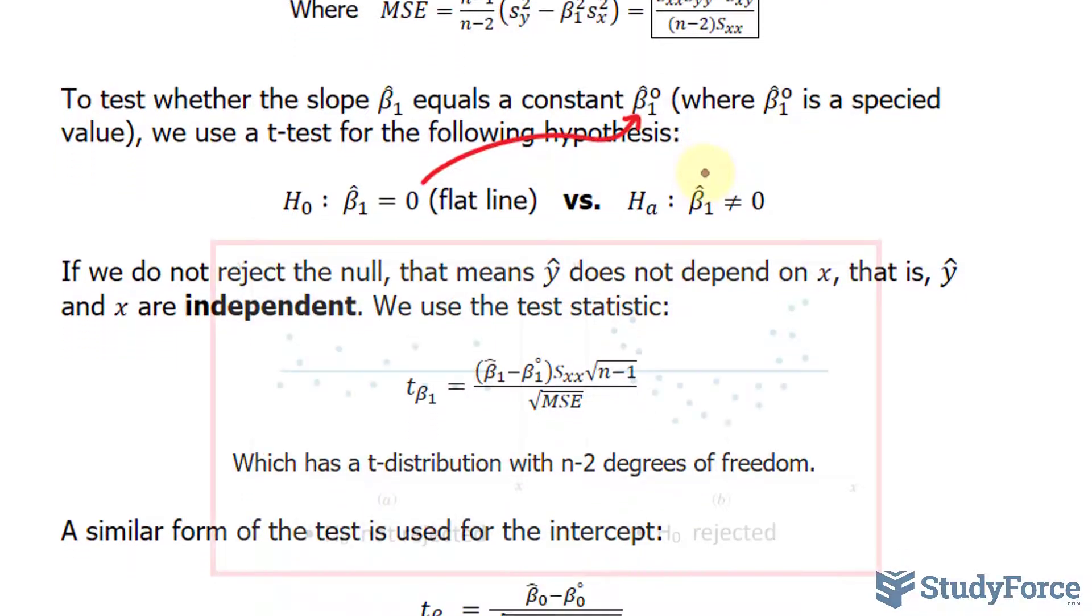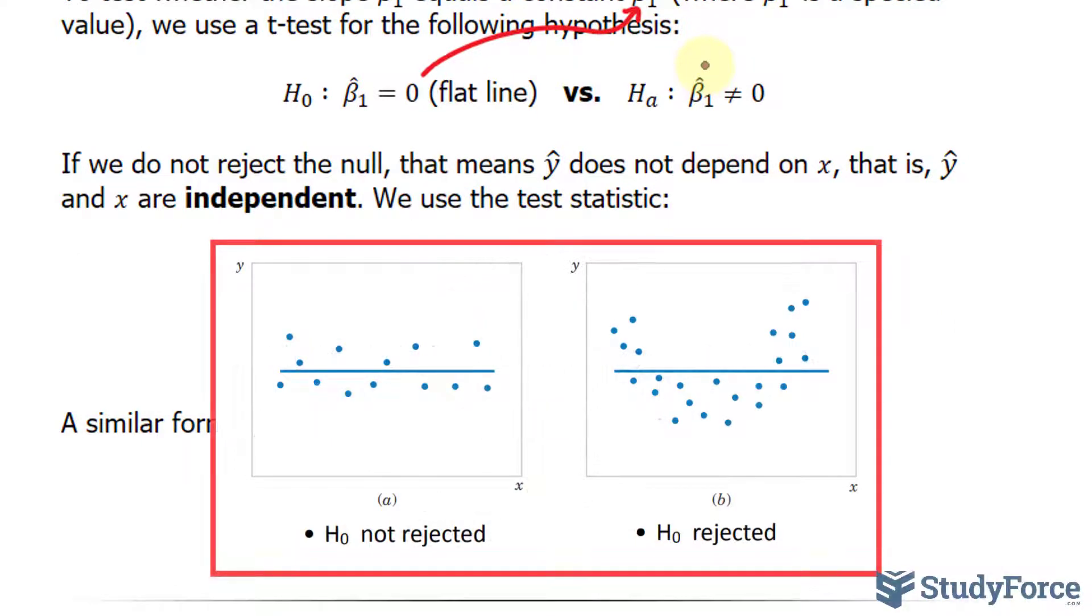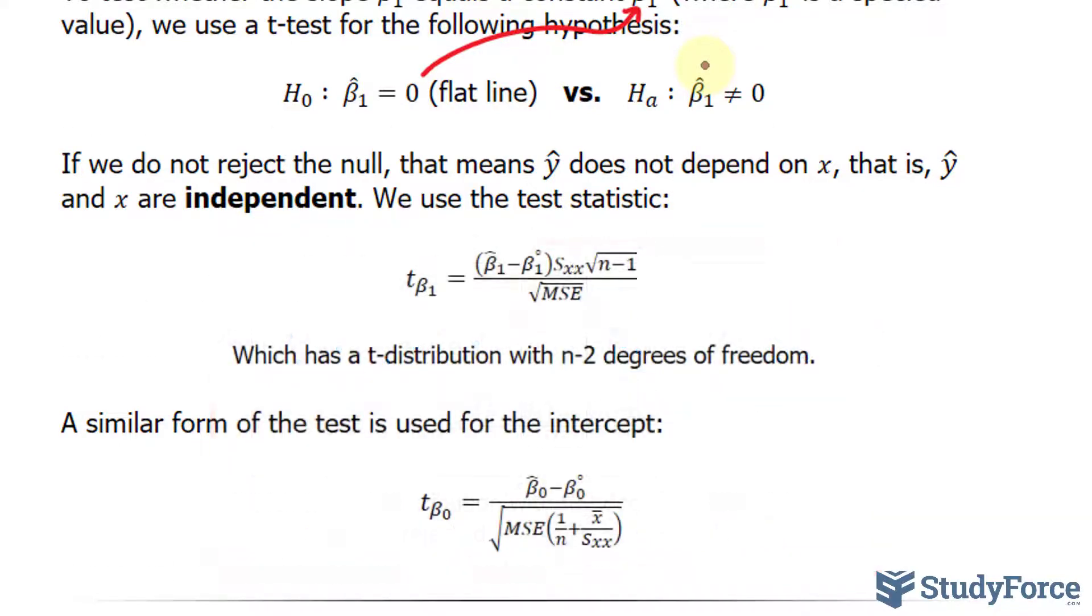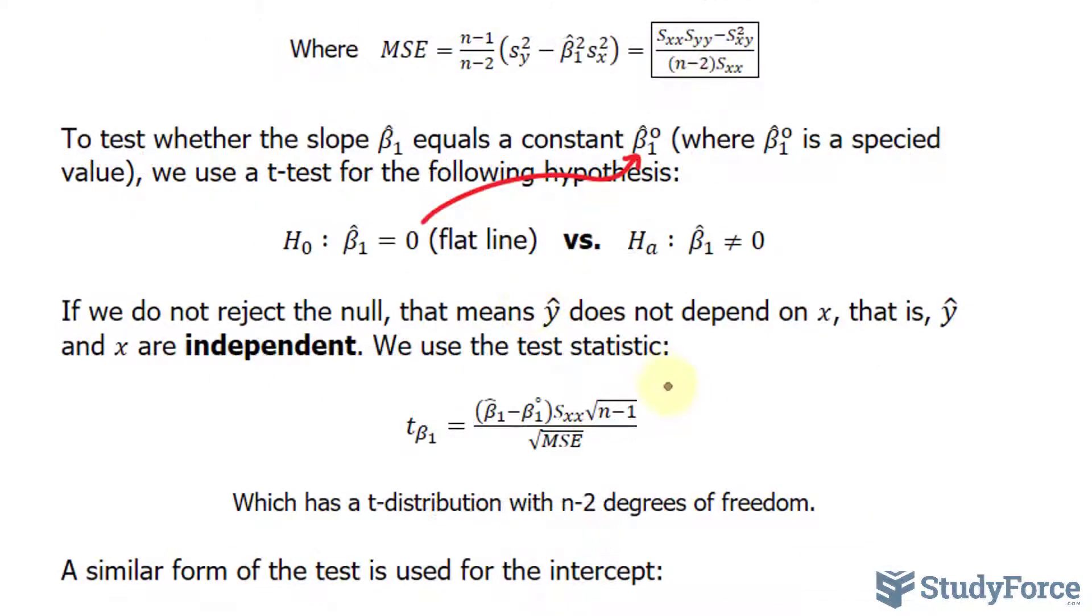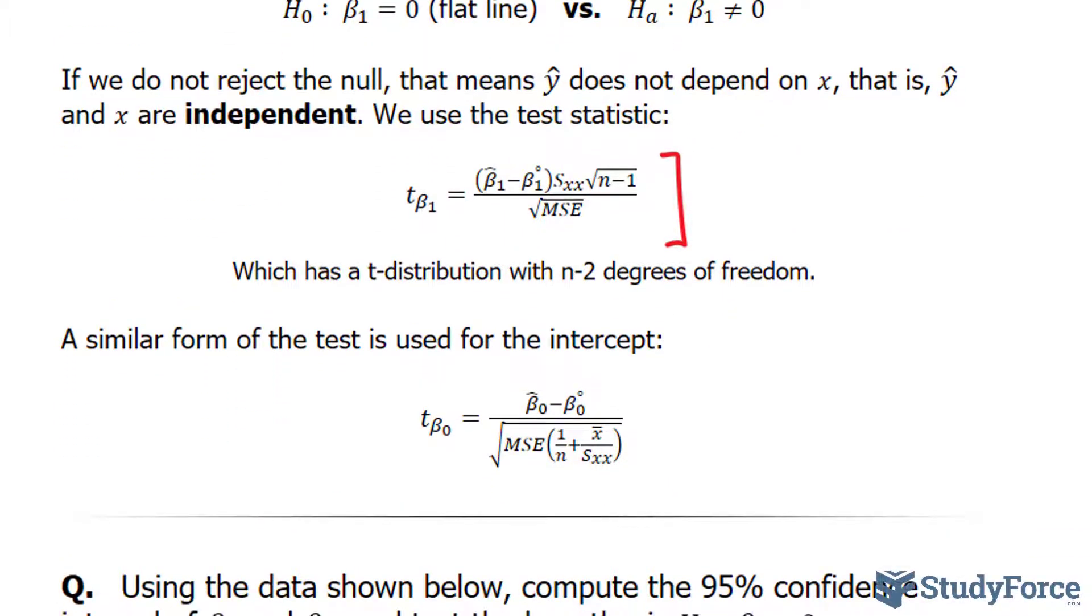By testing if it is a flat horizontal line, we can tell if x and y are dependent or not. Rejecting the null hypothesis tells us that they are dependent on each other. The test statistic we use is shown right here and we'll be using that later on in the question. A similar form of the test is used for the intercept, but in this question we'll only be looking at the significance of the slope.